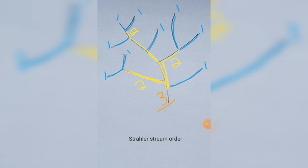So the stream order of this drainage basin is equal to three according to the Strahler stream order.